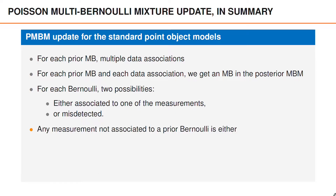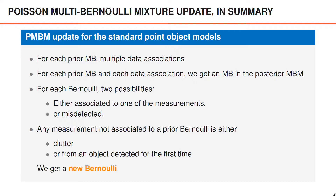It becomes different when a measurement is not associated to a prior Bernoulli. In the MBM filter, such a measurement is associated to clutter. However, in the PMBM filter, a measurement that is not associated to a prior Bernoulli is either clutter or it is from an object detected for the first time. Therefore, for each measurement not associated to a prior Bernoulli, we get one new Bernoulli. We will refer to this as a potential new object — an object that is in the surveillance area but has never been detected in any of the previous time steps.